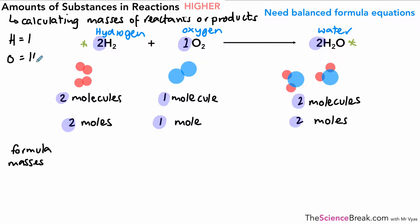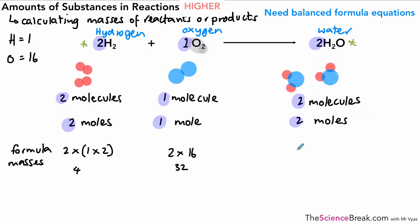For hydrogen we have a relative atomic mass of 1 and oxygen is 16 — those are taken from the periodic table. For hydrogen it's 2 × (1 × 2), giving us 4. For oxygen it's 2 × 16 — remember that little 2 applies to the oxygen — giving us 32. For water it's 2 × (2H + O) = 2 × 18 = 36. If we added up the formula masses of the products and reactants they would be the same, but we can use these ideas together — the fact that substances react in ratios — to work out masses of reactants or products.